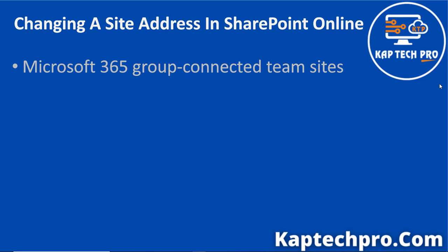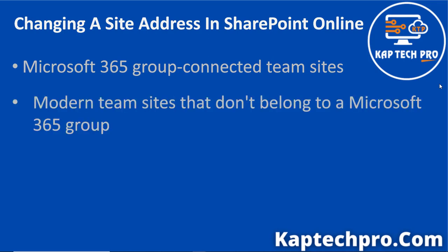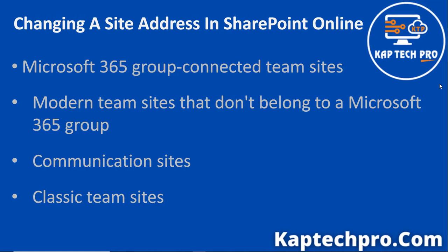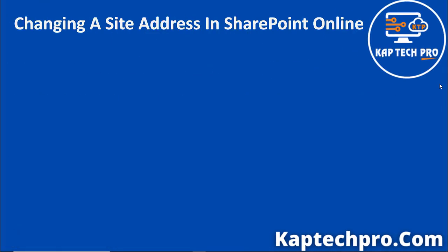The types of SharePoint sites for which you can change the URL are: Microsoft 365 group connected team sites, modern team sites that don't belong to a Microsoft 365 group, communication sites, and classic team sites. Changing a site address is not available for Microsoft 365 GCC High customers.